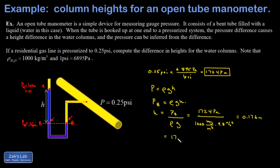When I installed a wall heater in my house several years ago, the instruction manual actually came with instructions to hook up an open tube manometer and look for a certain number of centimeters of column difference, just to make sure that your gas system is properly charged for the appliance.